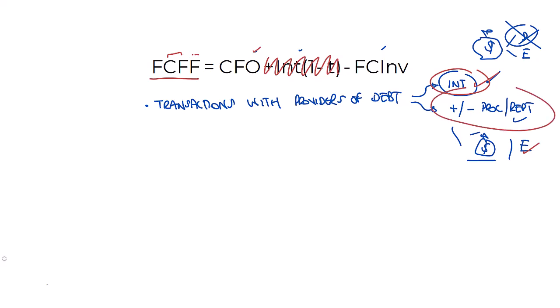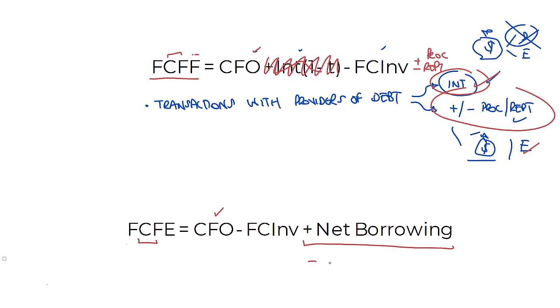Secondly, we need to take into account any proceeds from issuing debt or any repayments. So we just need an extra term in there, plus or minus, well, plus proceeds or minus repayments. And that is going to do it. That's what our FCFE is going to look like. CFO makes sure we've got a cash flow. Not adding back interest, but including net borrowing or deducting any net repayment. Make sure it's to equity. To make sure it's free, we are still deducting fixed capital investment. And we're in business.